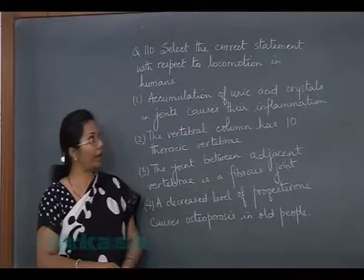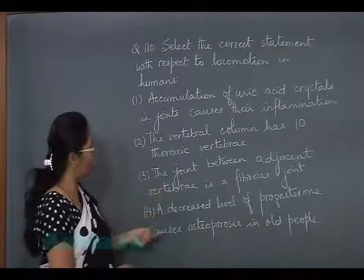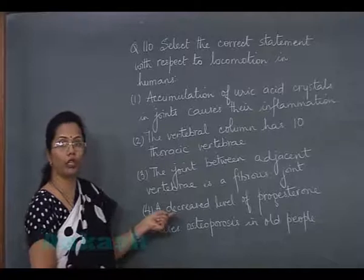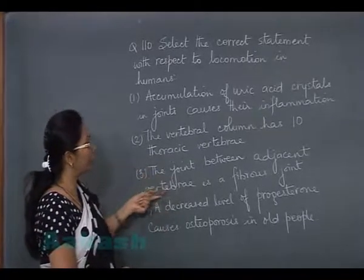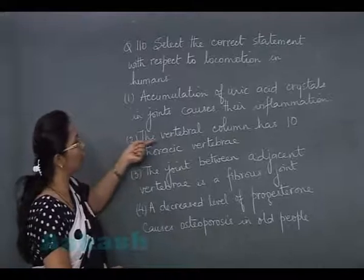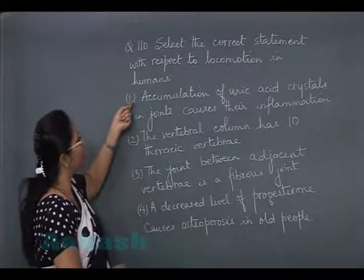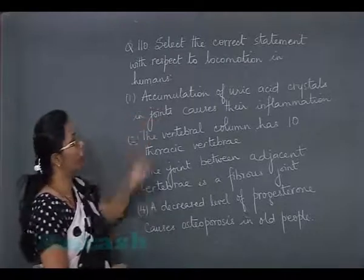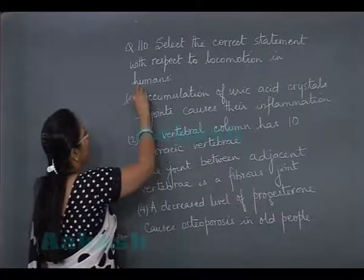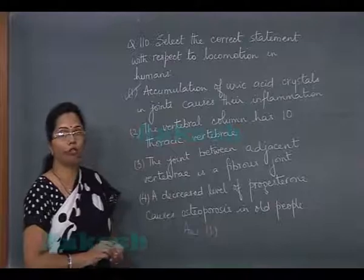Question 110 — select the correct statement about locomotion in humans. A decreased level of progesterone causes osteoporosis in old people — no, it is estrogen. The joint between adjacent vertebrae is a fibrous joint — incorrect, it is a cartilaginous joint. The vertebral column has 10 thoracic vertebrae — no, it has 12. The first option — accumulation of uric acid crystals in joints causes their inflammation — this is correct, as it is called gouty arthritis. So the correct answer is option 1. Let us move on to question 111.